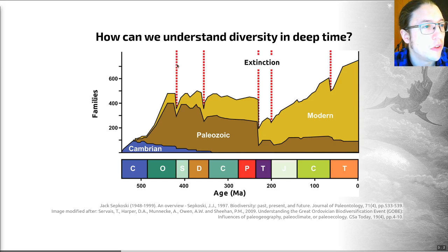These are periods which are marked with red dashed lines on this graph. These seem to be fairly large dips in the diversity of families that we see in the fossil record.